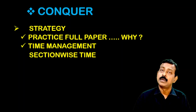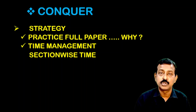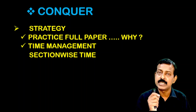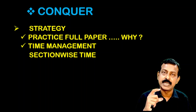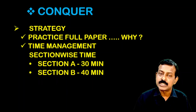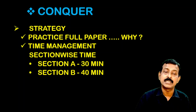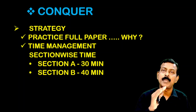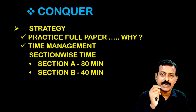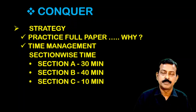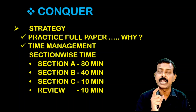For time management, you have 45 questions in 90 minutes — roughly two minutes per question. However, use a fixed section-wise timing approach: approximately 30 minutes for Section A, 40 minutes for Section B since its questions are of higher level and may take more time, and 10 minutes for Section C which has only five questions. This leaves 10 minutes for review and revision.